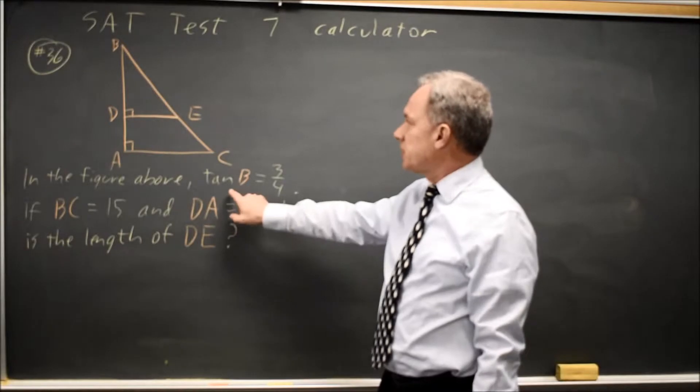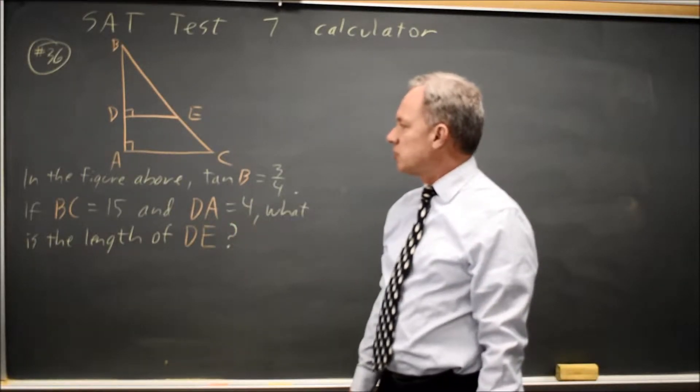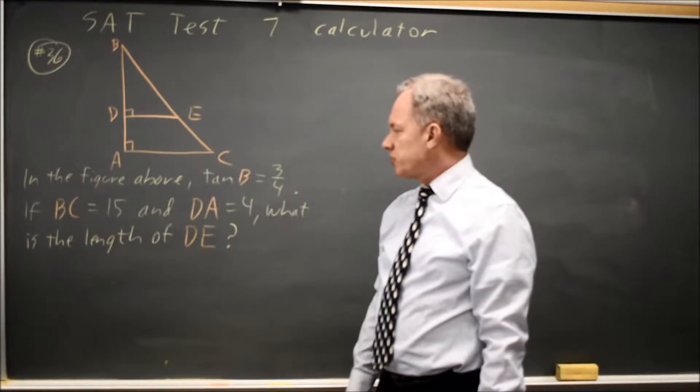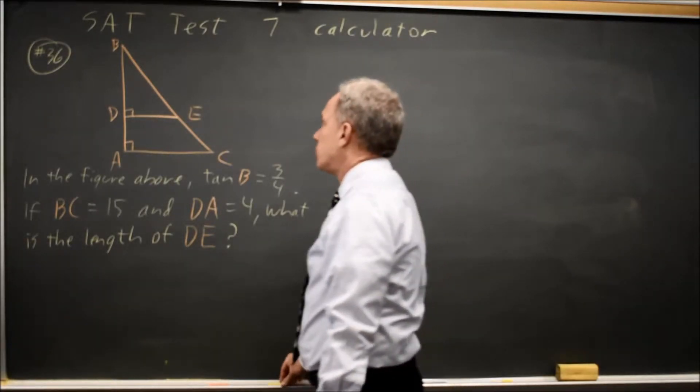In the figure above, they tell us that the tangent of angle B is 3 over 4. If BC is 15 and DA is 4,